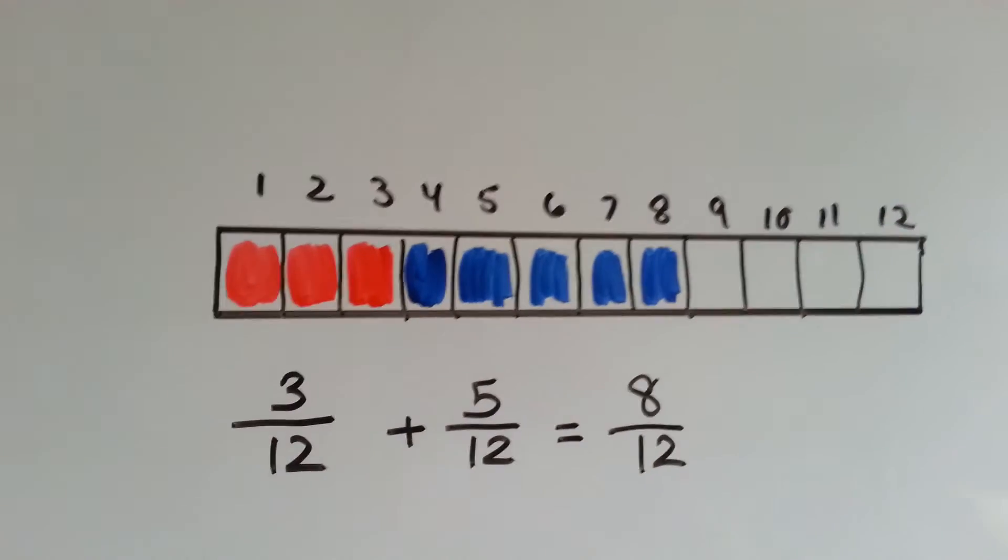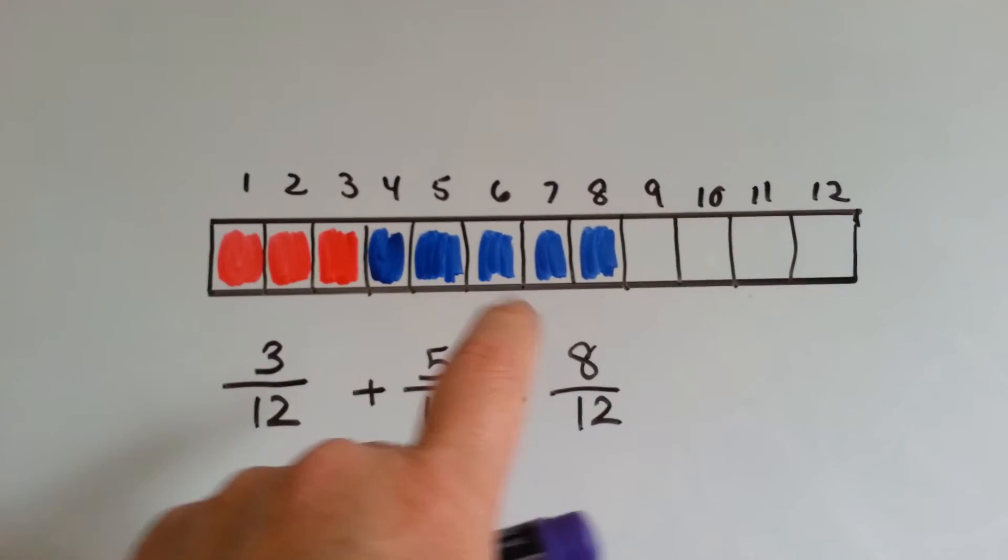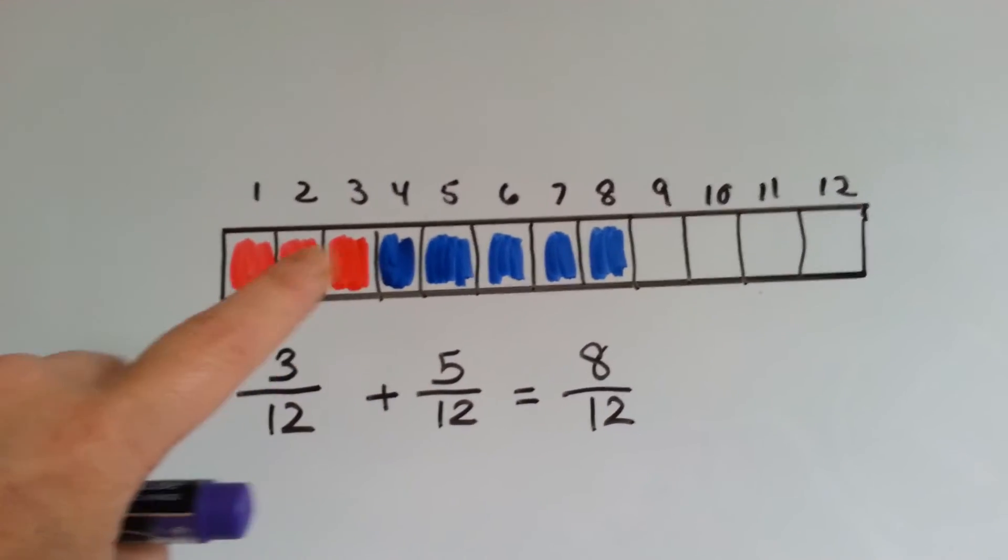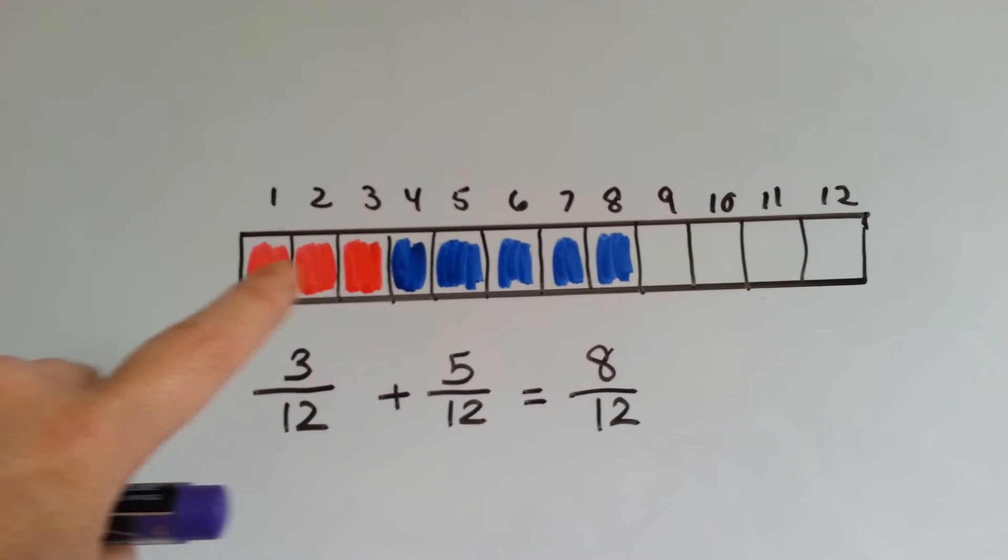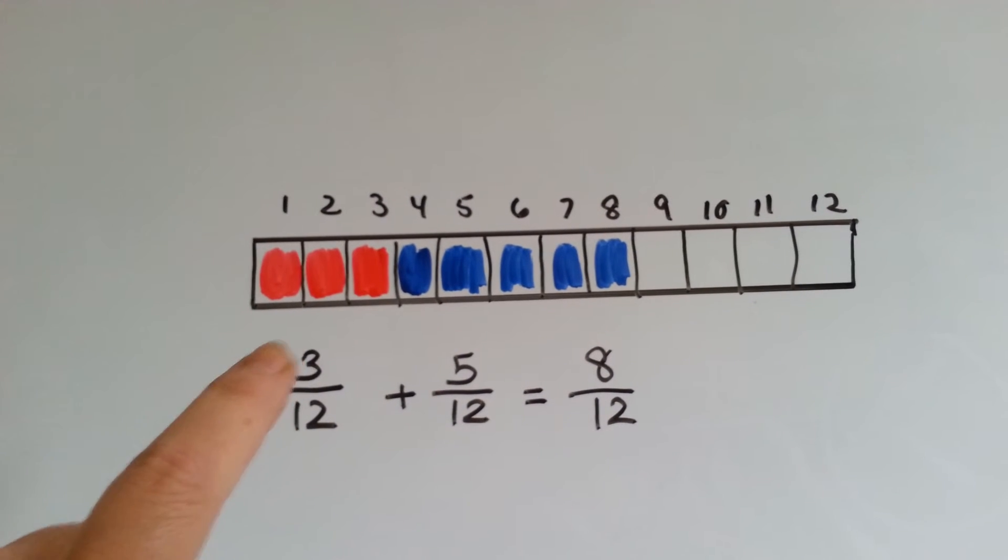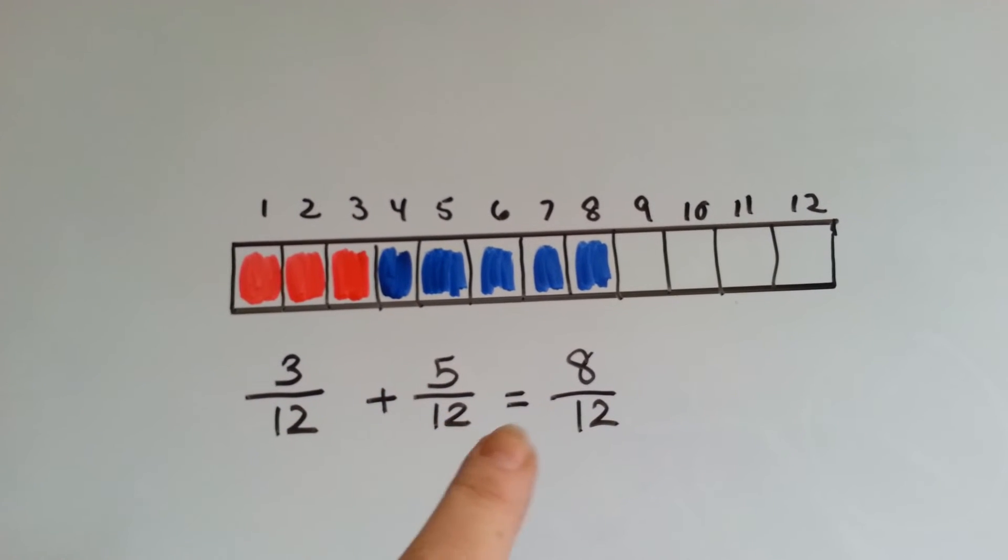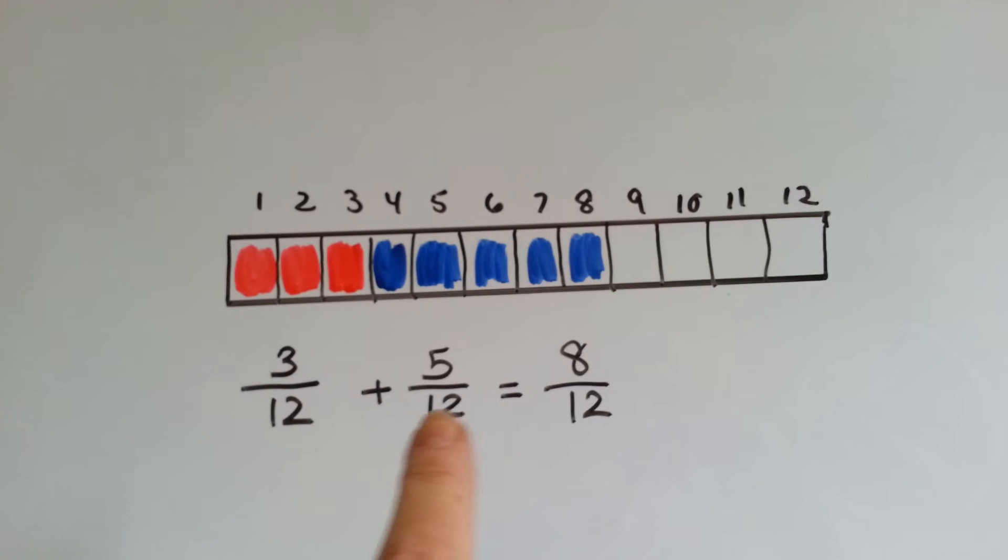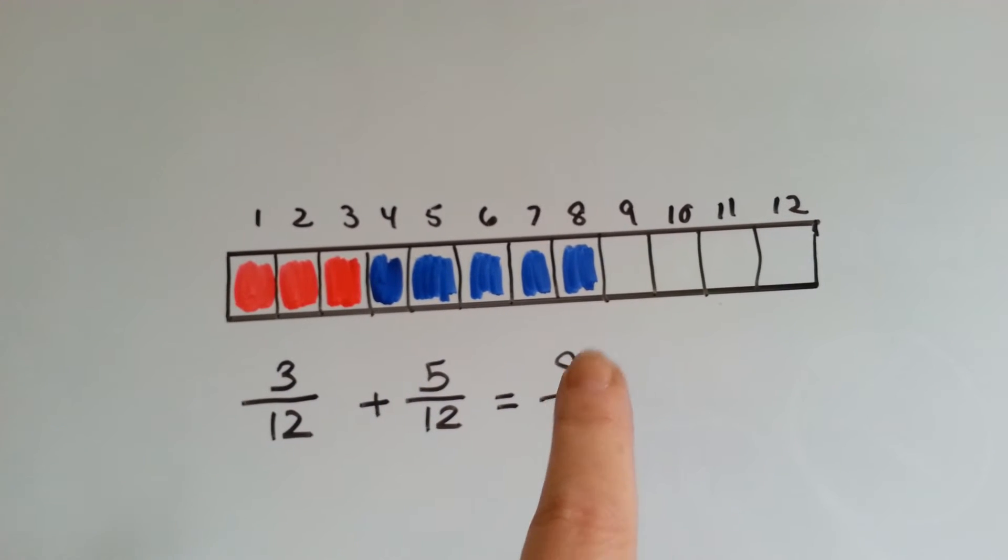Here's a bar of 12. It's split into twelfths. 3 of the 12 are colored red, and 5 of the 12 are colored blue. When you add 3 twelfths to 5 twelfths, you get 8 twelfths. Slide the denominator over, and add the numerator. There's 8.